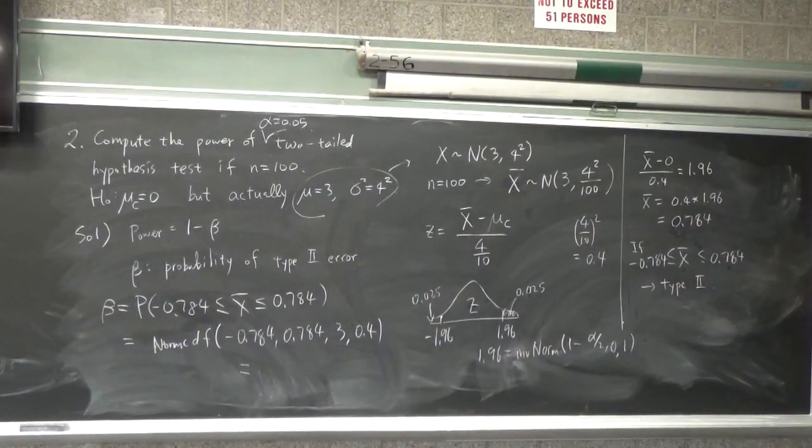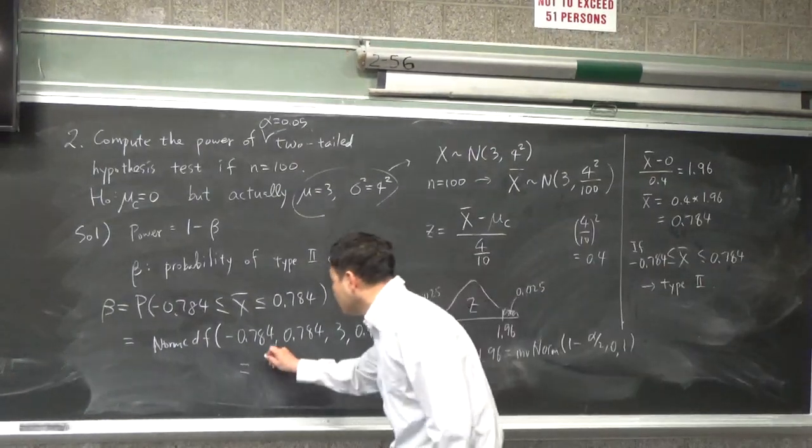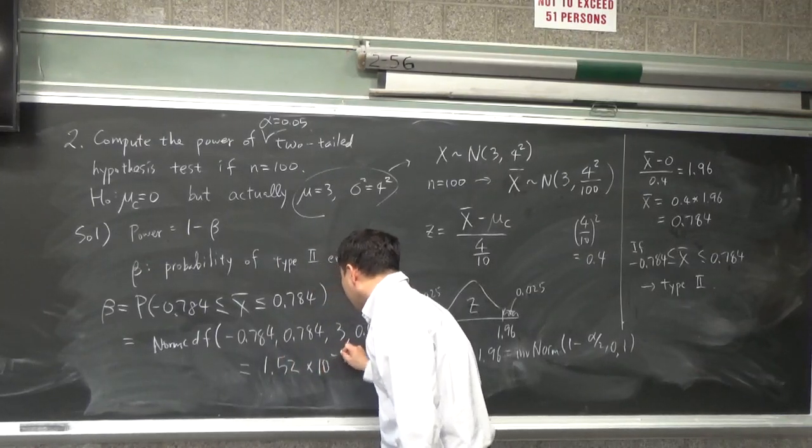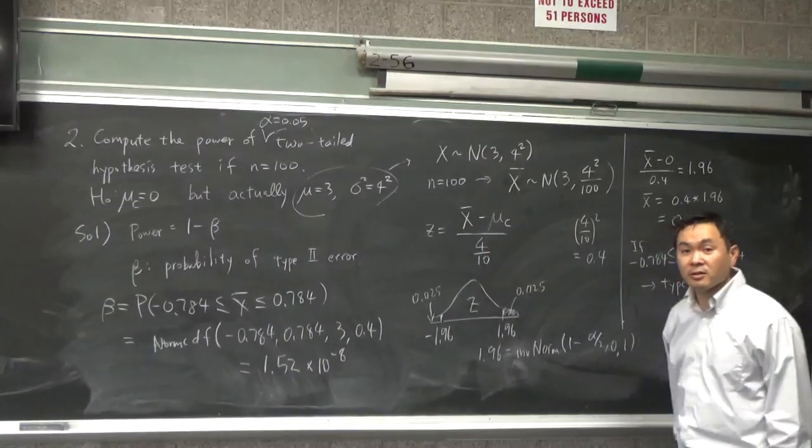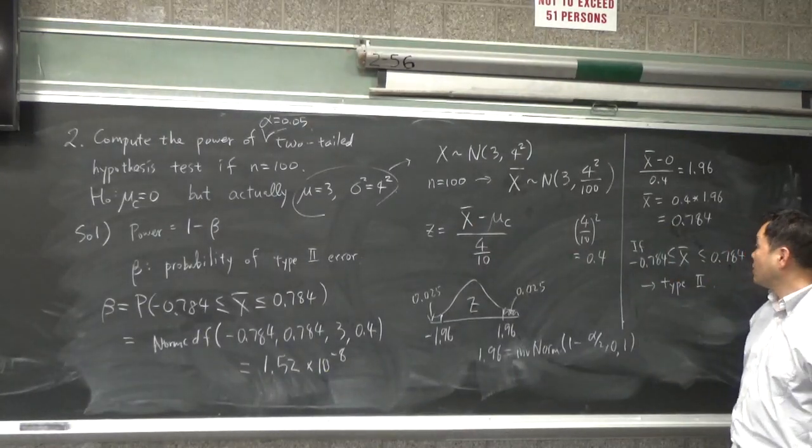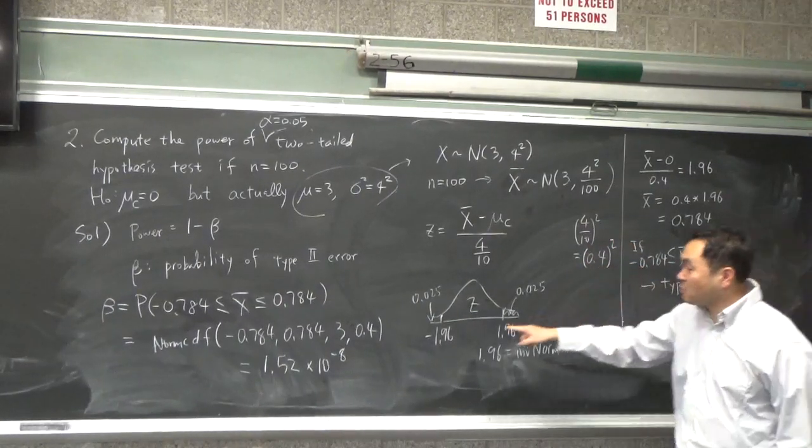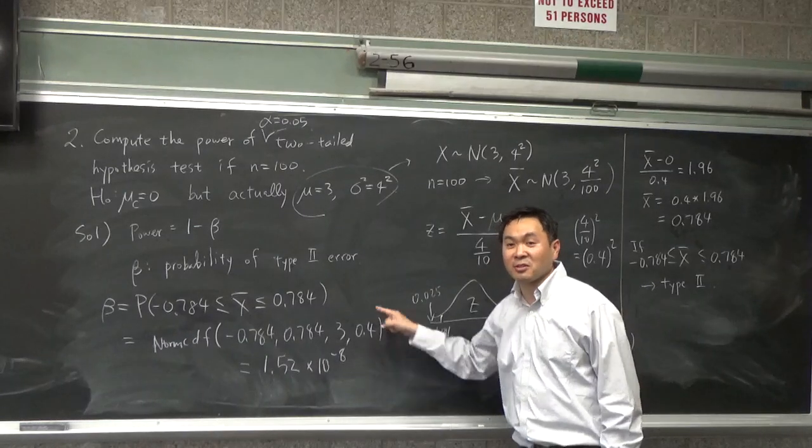Yeah, 1.52 times 10 to the negative 8th. 1.52 times 10 to the negative 8th, okay? So it says e negative 8th, yes? Is it 0.4 or 0.4 squared? Oh yeah, it's 0.4 squared, but then when you plug into the calculator, you should be plugging in the standard deviation, not the variance.